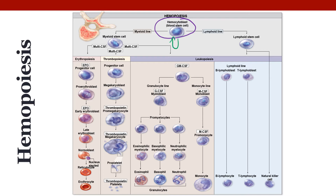When one of these hemocytoblasts divides, it produces two daughter cells. One remains a hemocytoblast so that we always have the same number of stem cells. The other has to make a decision: is it going to become a lymphoid cell or a myeloid cell? In the actual body, most of them become myeloid because we don't need that many lymphoid cells, but sometimes they will become lymphoid.